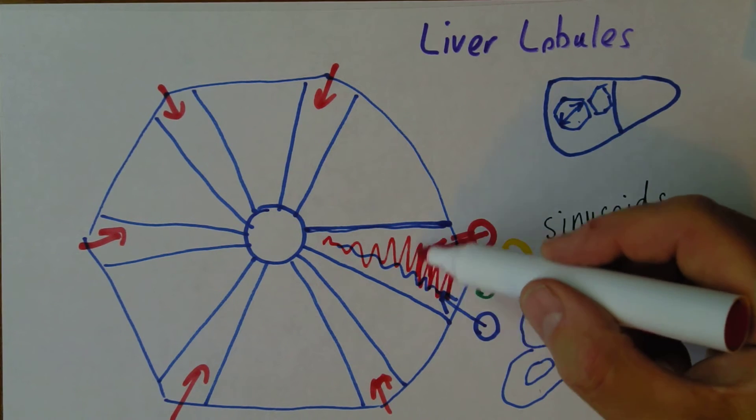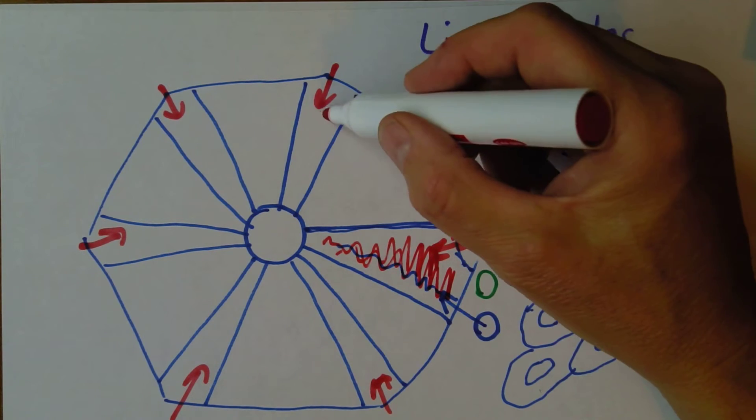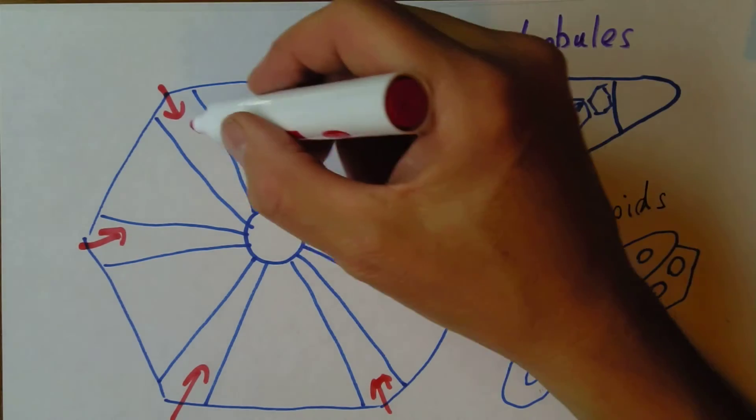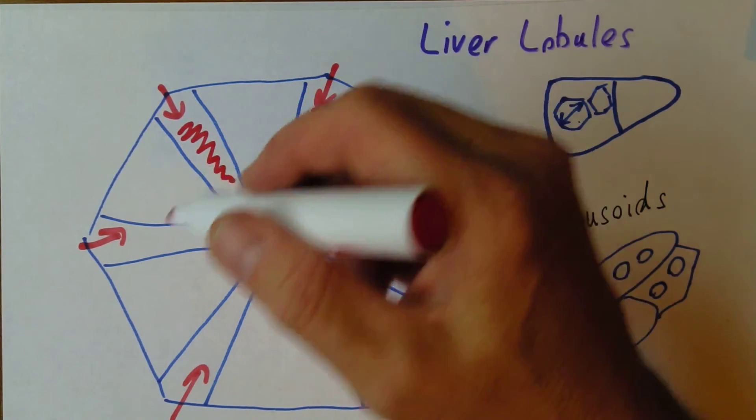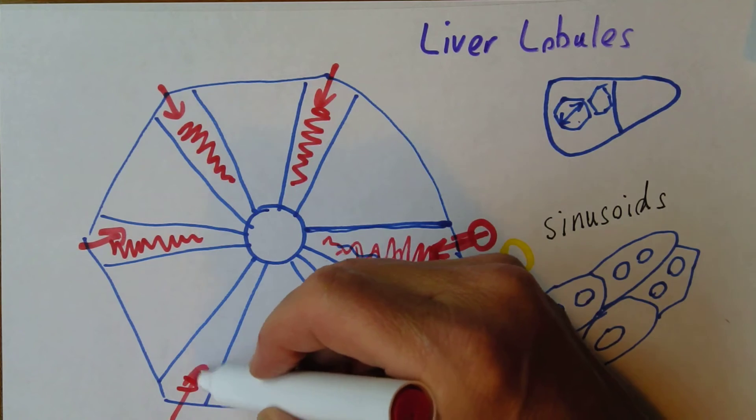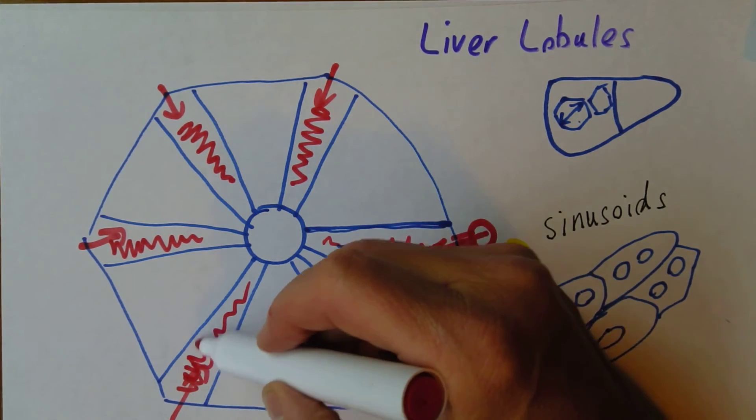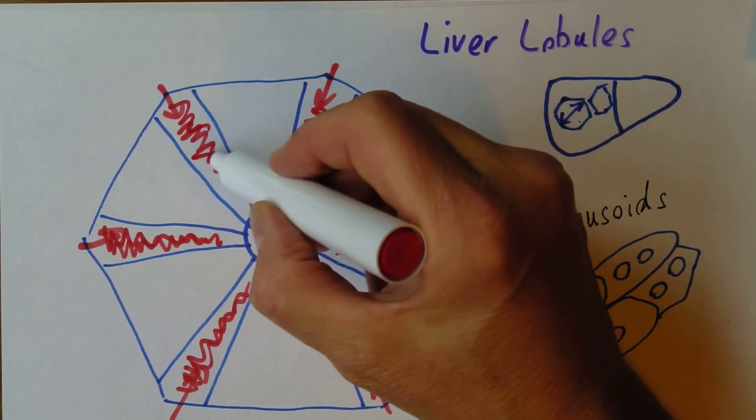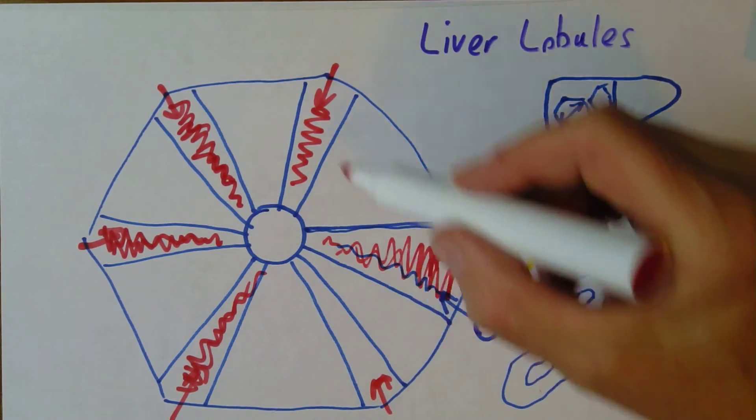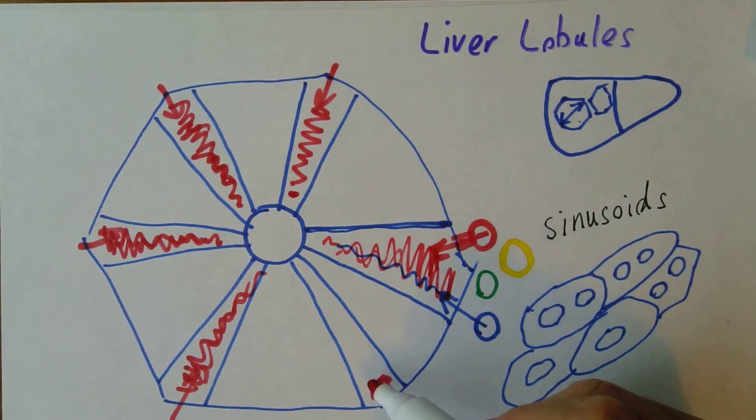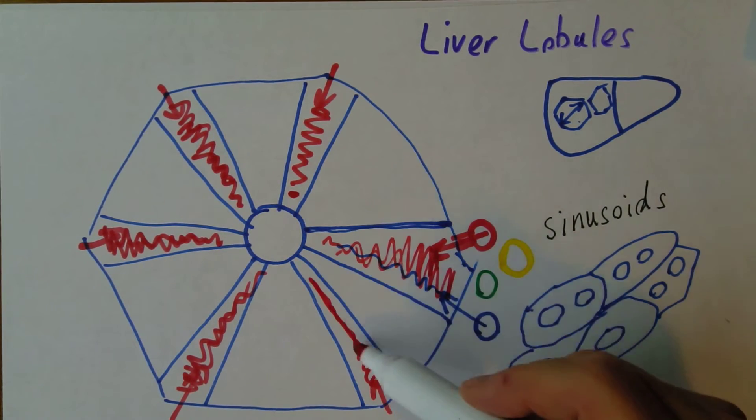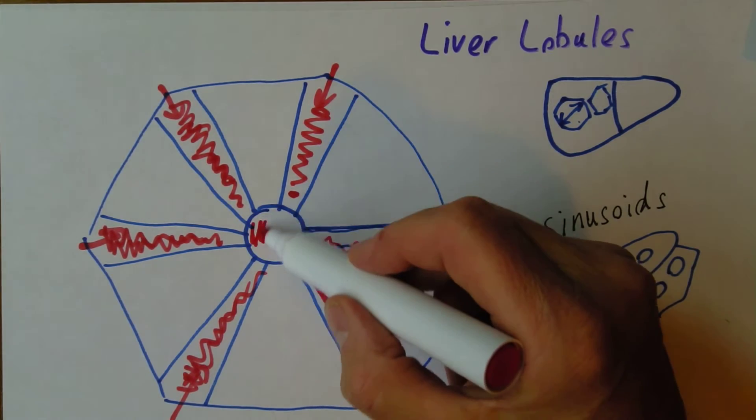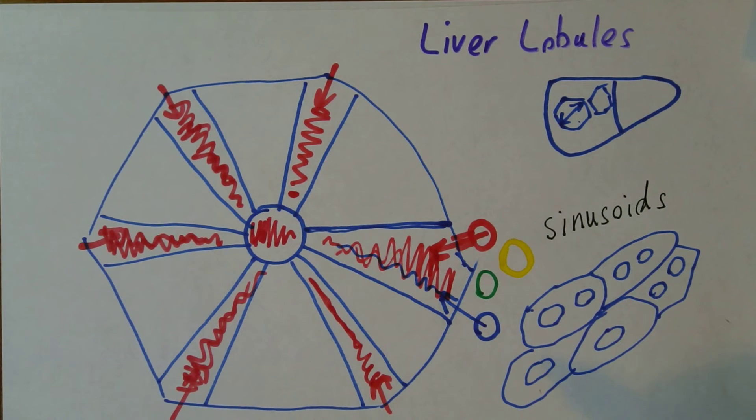Now I've drawn the blood from the hepatic portal vein as dark, as blue. It's actually relatively oxygenated but still about 75% saturated, whereas the blood from the hepatic artery will be 98, 99% saturated probably. Here's the blood in the capillaries flowing towards the central vein which will drain into larger veins and drain it away.